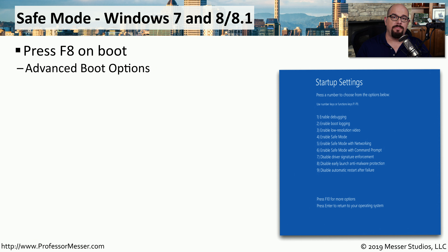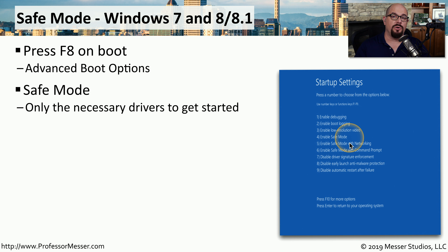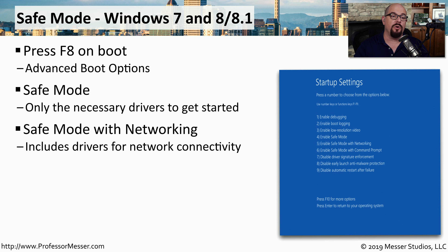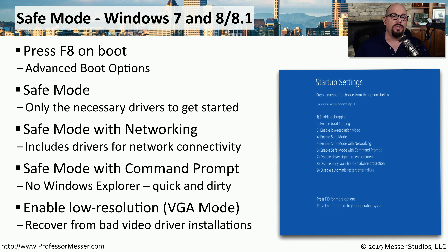When Windows starts, it's loading all of the applications and services needed to run your version of Windows. If you're troubleshooting the operating system, you may want to run in a version that doesn't enable all of these features — we call this Safe Mode. You would enable Safe Mode from the startup settings in Windows 7, 8, or 10, normally by pressing F8 during the boot process and then enabling the settings. The default for Safe Mode is to start Windows with just the necessary drivers. You may also want Safe Mode with Networking for network access, Safe Mode with Command Prompt, or Safe Mode in VGA mode for basic video configuration.